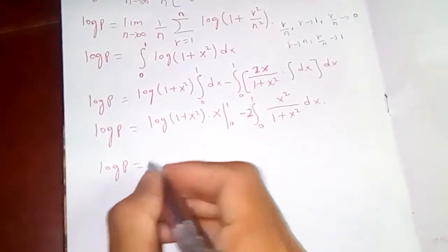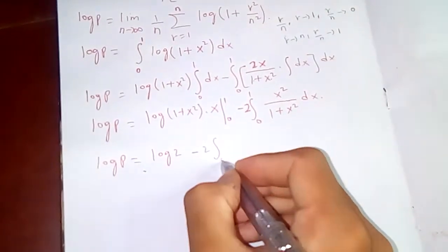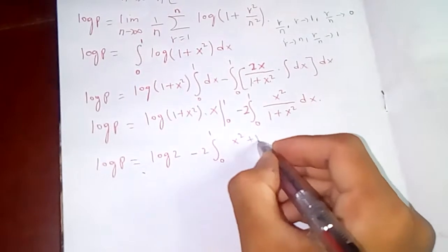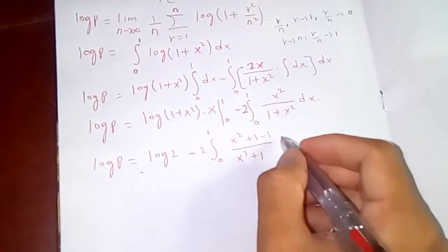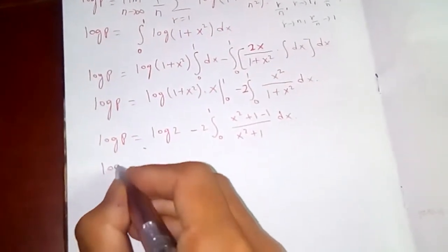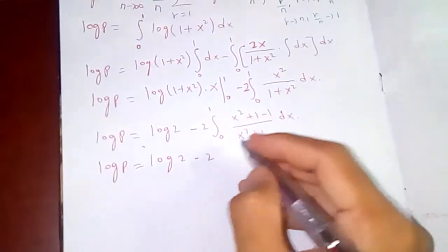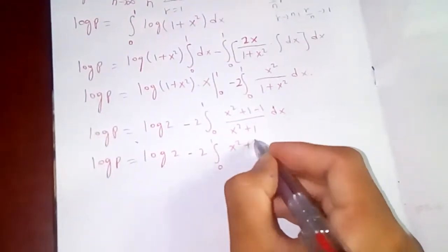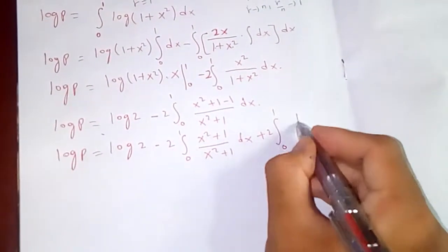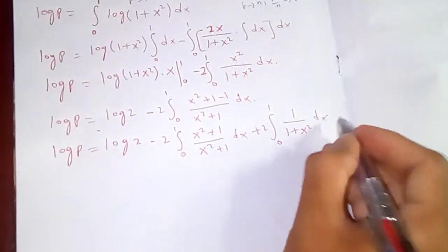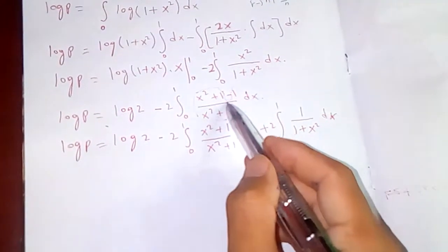Plugging in the limit x = 1 gives log 2. So log p = log 2 minus 2 times the integral from 0 to 1 of x²/(1 + x²) dx. We rewrite x²/(1 + x²) as 1 − 1/(1 + x²) by adding and subtracting 1, giving log p = log 2 minus 2 times the integral of 1 dx plus 2 times the integral of 1/(1 + x²) dx.